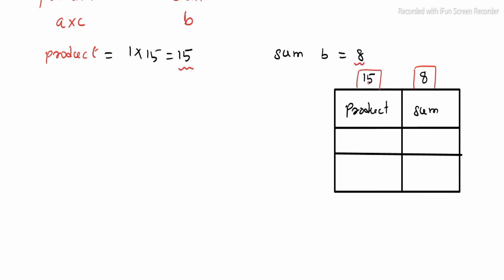These 15 kind of factors: 1 into 15, 3 into 5, this is applicable. What factors do we need to add? We need to add those factors. So 1 plus 15 which is 16, 3 plus 5 which is 8.